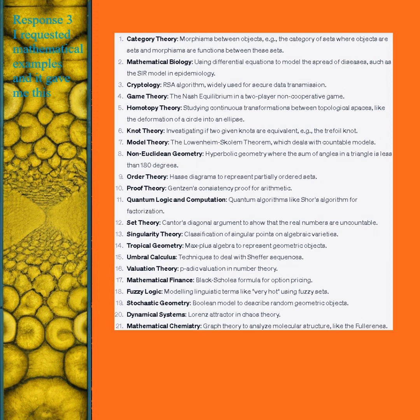Response 3. I requested mathematical examples. Category theory — morphisms between objects. Example: the category of sets where objects are sets and morphisms are functions between these sets. Mathematical biology: using differential equations to model the spread of diseases, such as the SIR model in epidemiology. Cryptology: RSA algorithm, widely used for secure data transmission. Game theory: the Nash equilibrium in a two-player non-cooperative game. Homotopy theory: studying continuous transformations between topological spaces, like the deformation of a circle into an ellipse. Knot theory: investigating if two given knots are equivalent — example: the trefoil knot.